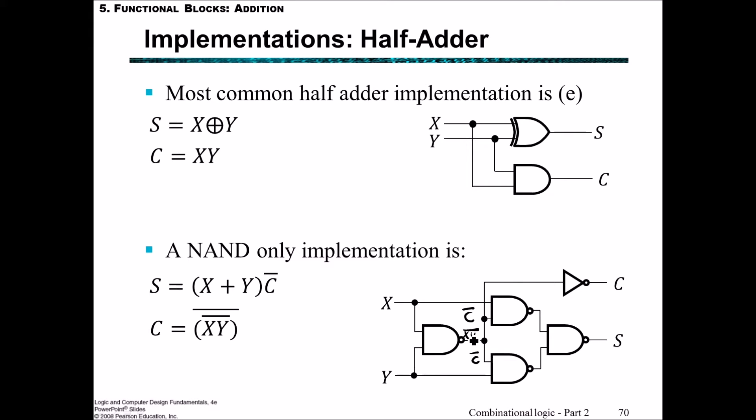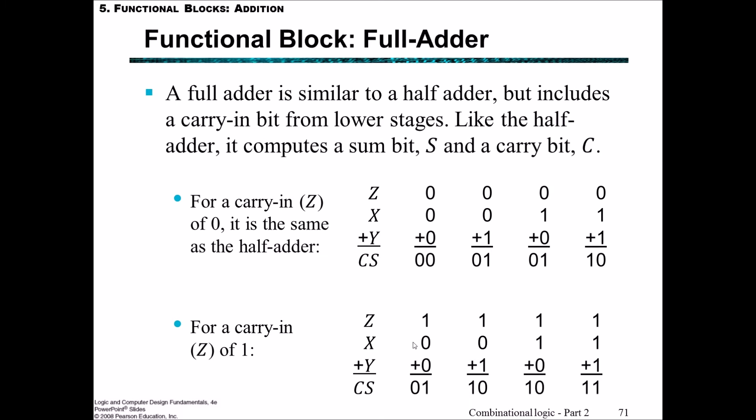For the full-adder, it's similar to the half-adder but also includes a carry-in bit from lower stages. While the half-adder only had a carry bit that carries down the line, the full-adder has a bit being carried in and an output carry. We still have X and Y inputs, but also have the Z input, which is the carry-in. When Z equals zero, this is exactly the same as the half-adder.